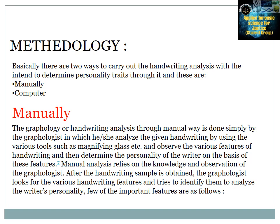Basically, there are two ways to carry out handwriting analysis: manually and by computer. Manual graphology analysis is done by a graphologist who analyzes a given handwriting sample using various tools such as a magnifying glass, observing various features of handwriting to determine the personality of the writer. Manual analysis relies on the knowledge and observation of the graphologist. After the handwriting sample is obtained, the graphologist looks at various handwriting features to analyze the writer's personality.